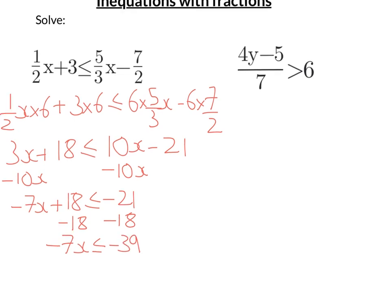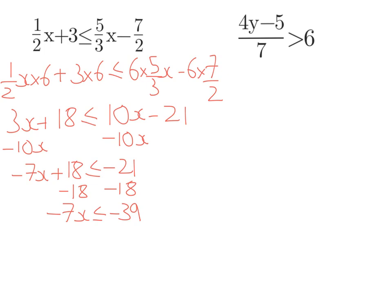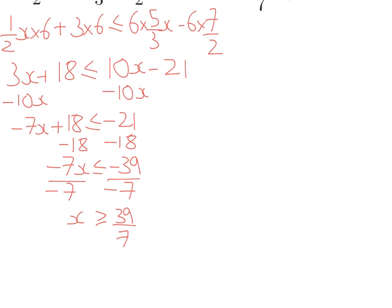And now lastly, I'm going to divide by negative 7 to get X on its own. When you're dividing or multiplying by a negative number, you switch the sign. So we're going to have X is greater than or equal to 39 over 7, or we can write that as X is greater than or equal to 5 and 4 sevenths.